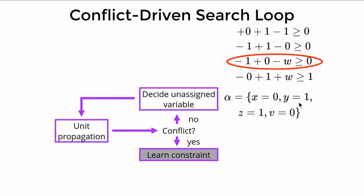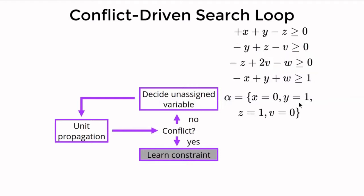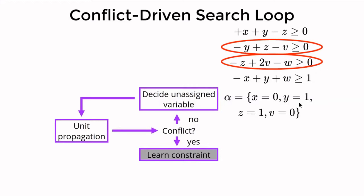The solver looks at the original constraints involved in the propagations that led to the conflict — in our example constraints two and three. If we manipulate these in the right way, in this case adding constraint two twice and constraint three once, we get an appropriate learned constraint which is still falsified by the partial assignment. We add this constraint to our set of constraints phi.